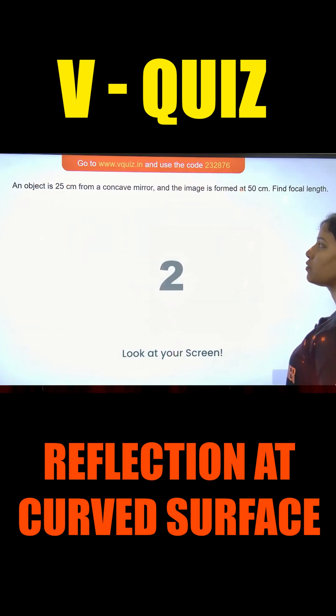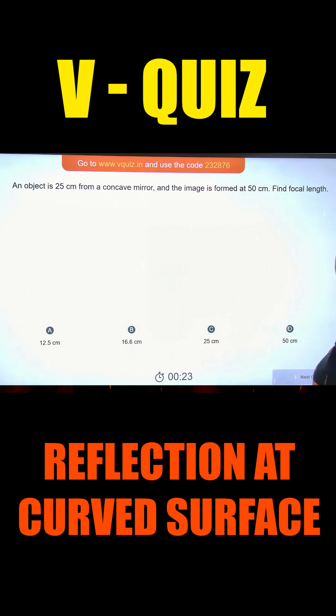An object is 25 cm from a concave mirror and the image is formed at 50 cm. Find the focal length.